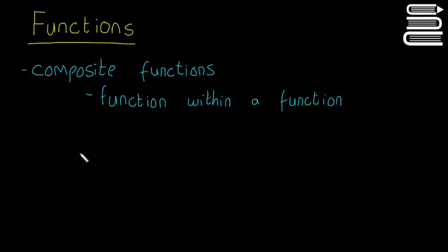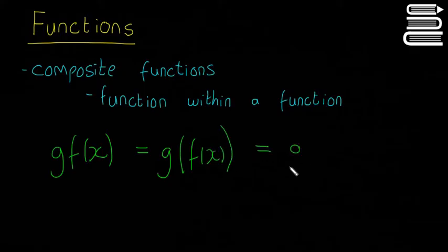There's a couple different notations, so for example they could write gf of x, or they could write g of f of x, or they could write g circle f of x. So there are three different ways of writing the exact same thing. I wanted to show you those in case any of these come up in the exam so you know what to expect.